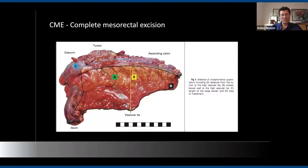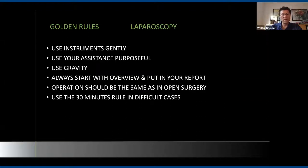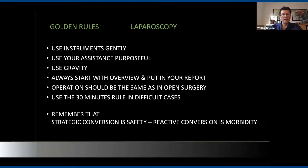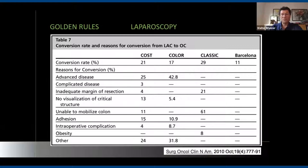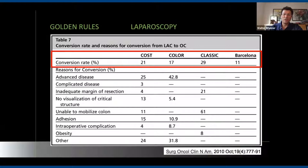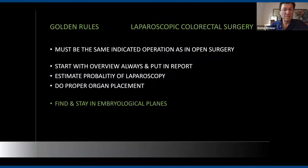Notably, transverse colon resections were mainly excluded from large laparoscopic trials. The most difficult aspect of laparoscopy is finding and staying in embryological planes. Golden rules include staying on Toldt's or Gerota's fascia and not cutting through them. No-touch technique applies to the transverse colon — do not touch the tumor or mesocolon, use a swab rather than disrupting the specimen, and maintain the specimen's integrity from start to finish.